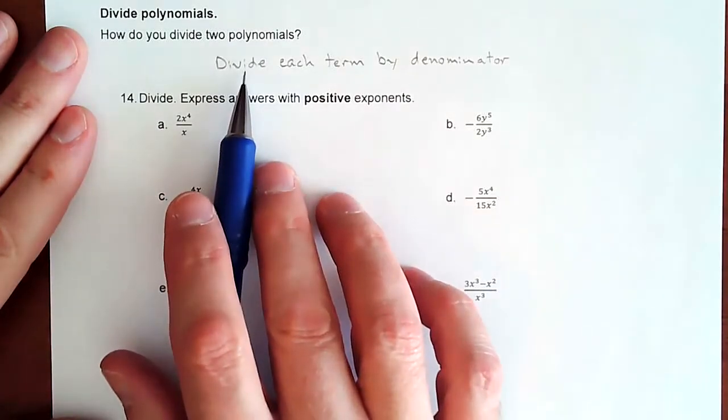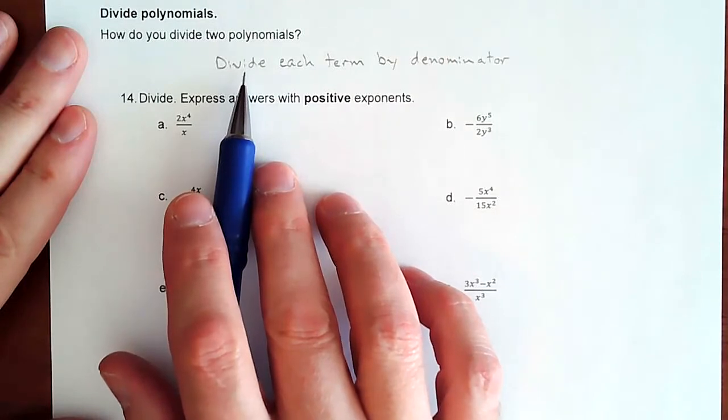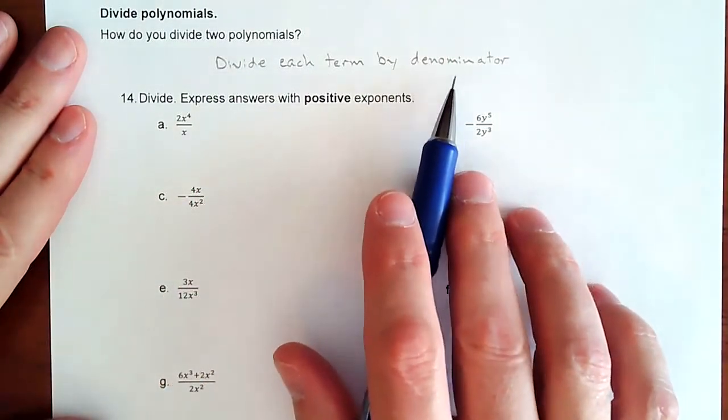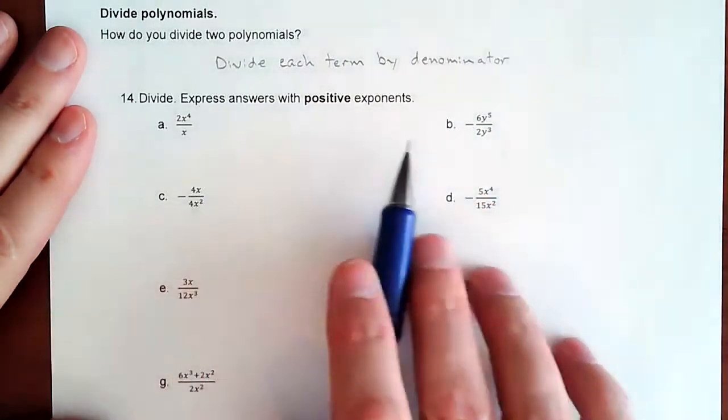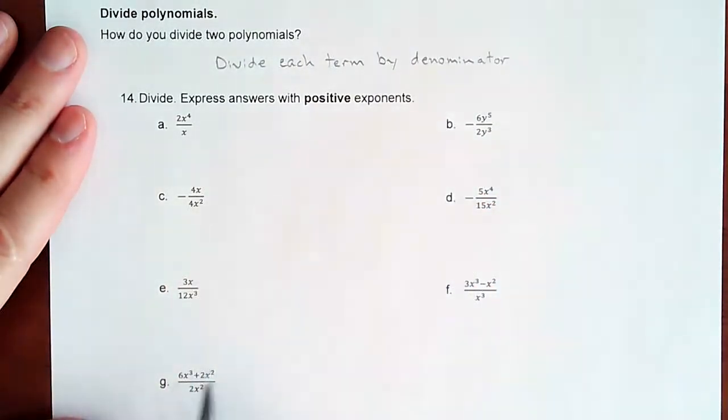So to divide polynomials, you're literally just going to divide each term by the denominator. So it's very straightforward on this first five, but we'll show you what we mean by these up next, the last two.